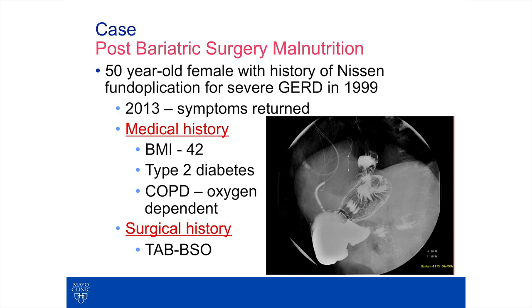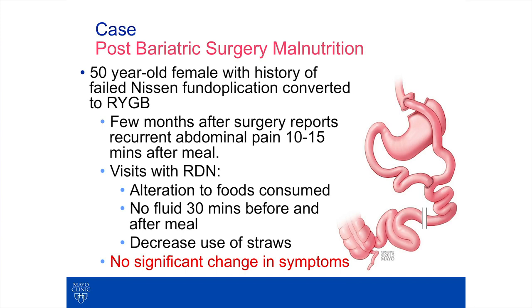This is a 50-year-old female we were asked to assist with nutrition support on the outpatient side. She had a history of a Nissen fundoplication for severe reflux done in 1999, but came back in 2013 with all her symptoms returned. At that time she was also obese with comorbidities. Workup found that the Nissen fundoplication was coming apart and she had developed a small hiatal hernia. The decision was made to transition her to a Roux-en-Y gastric bypass—a fast-growing trend, especially in obese patients, where Nissen fundoplications are being transitioned to Roux-en-Y.